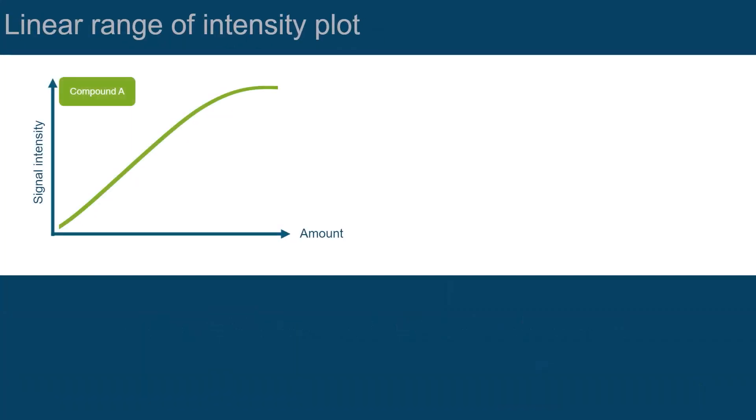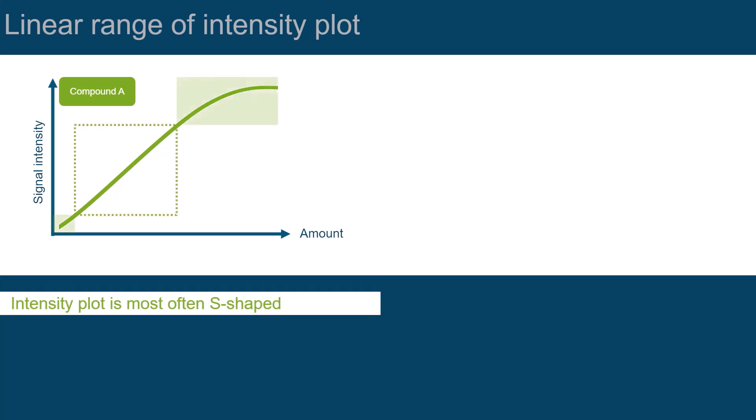Before we move on with the discussion of calibration curves, let's have a closer look into the intensity plot. Most often, it is S-shaped. We can define three different ranges. At lower amounts, it usually has a flattened slope. With increasing amounts, it becomes linear before it starts to run into saturation at high amounts.